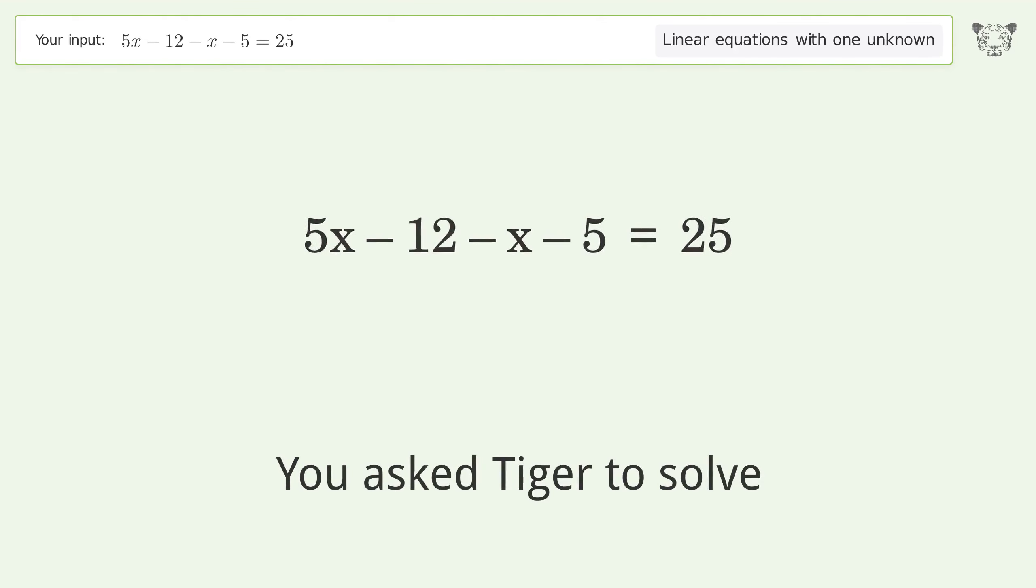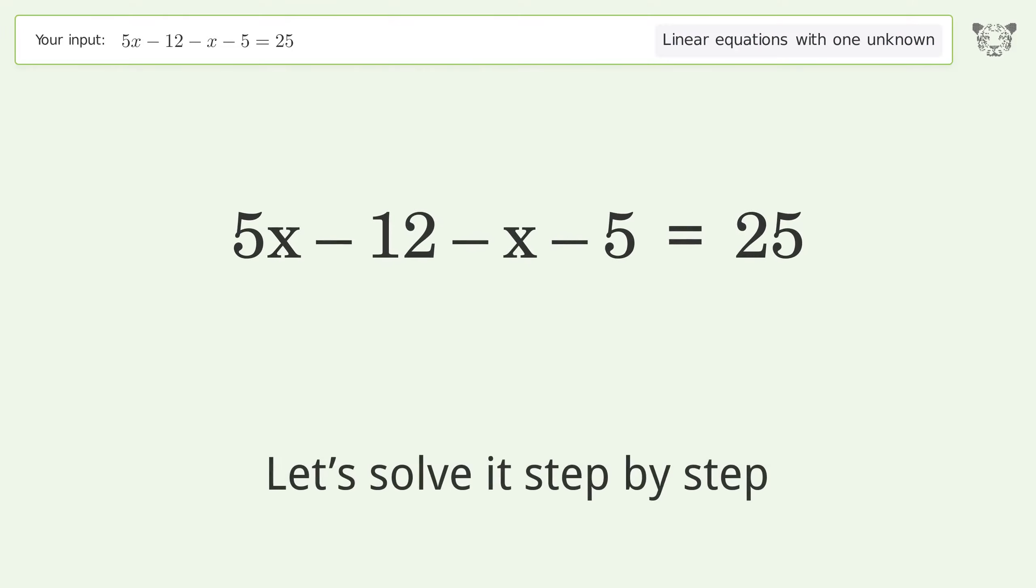You asked Tiger to solve this. It deals with linear equations with one unknown. The final result is x equals 21 over 2. Let's solve it step by step.